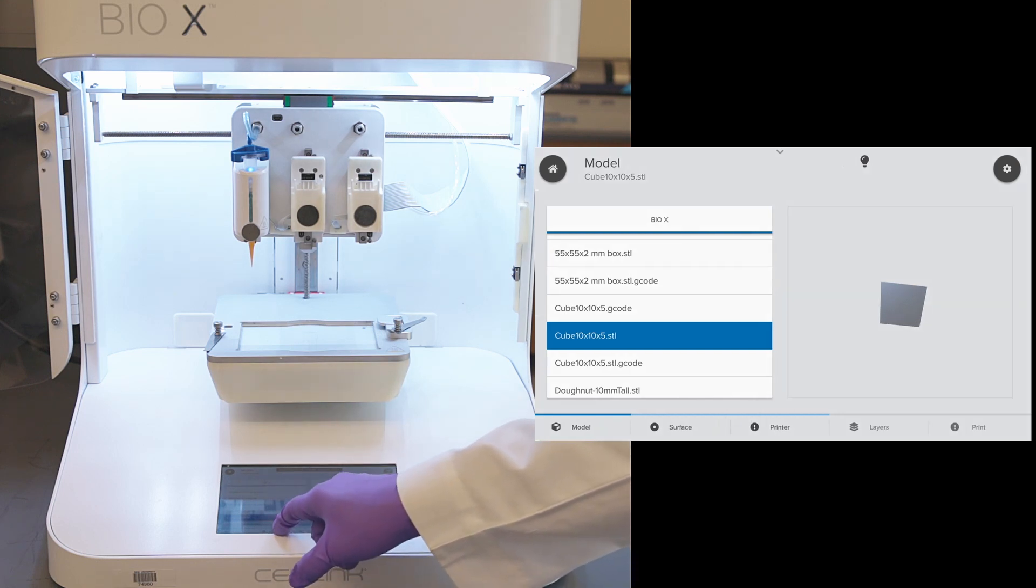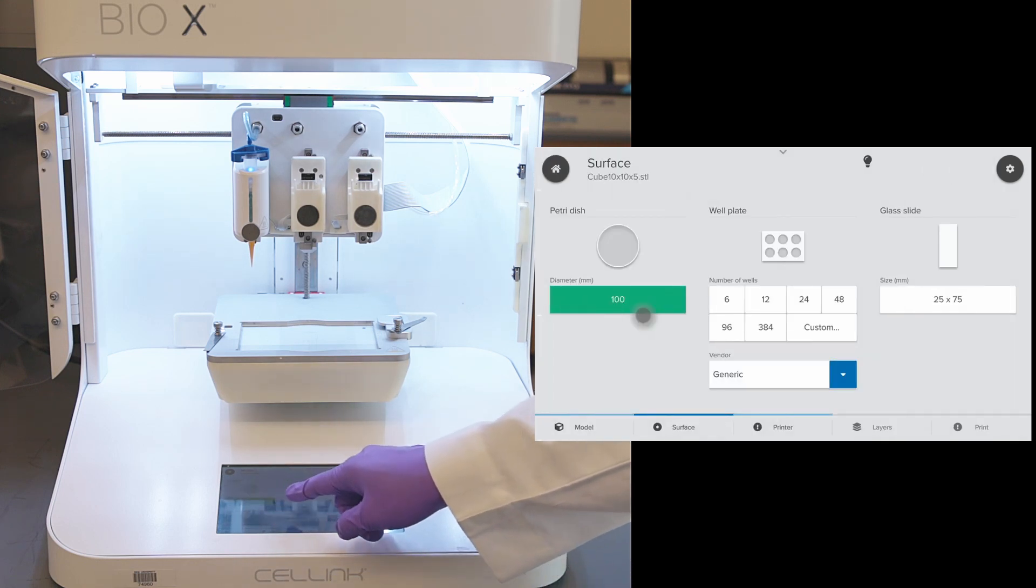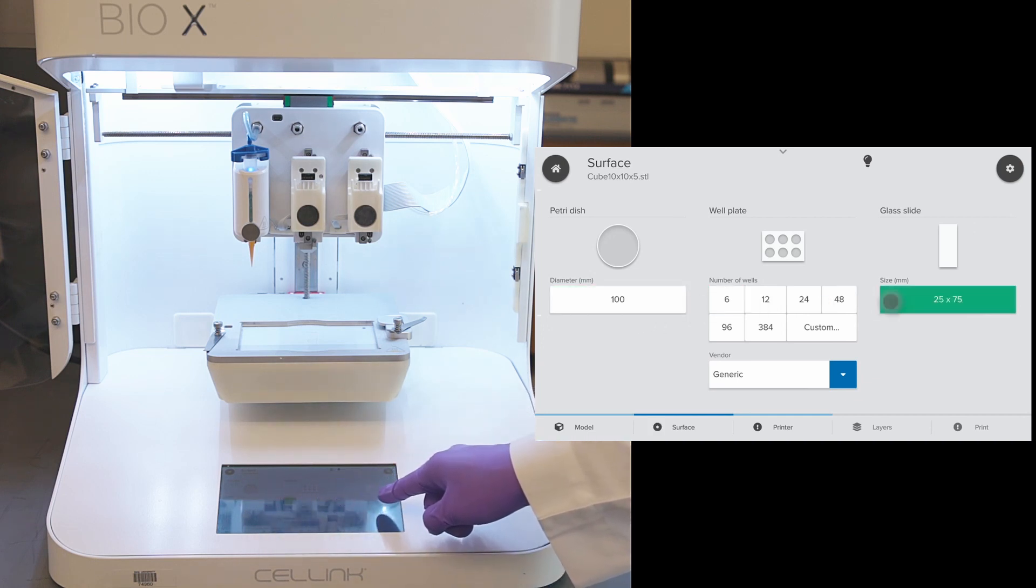Next is the surface. We can choose to print on a petri dish, a 6-well plate, or a glass slide. Today, we will be printing on a 6-well plate.